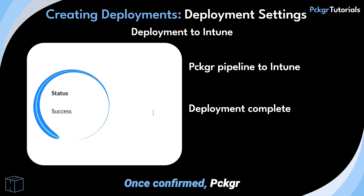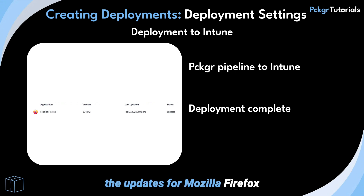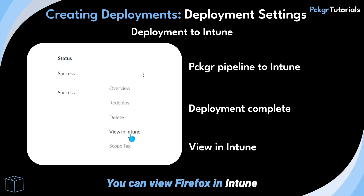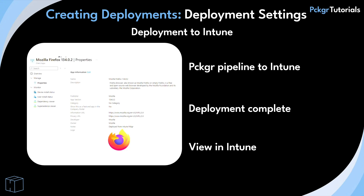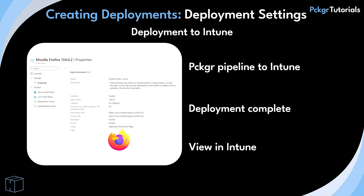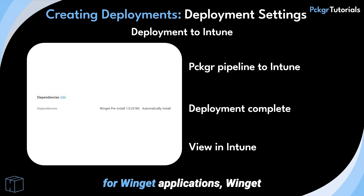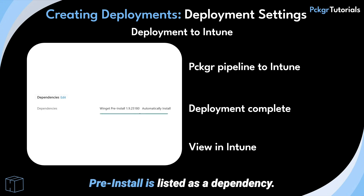Once confirmed, Packager updates the status to Success. Now you have successfully instructed Packager to automatically manage the updates for Mozilla Firefox for your chosen devices in Intune. You can view Firefox in Intune by clicking the three dots and selecting View in Intune. Packager does not change any of your application group assignments or other settings. The old version of the application is simply replaced with the new version. The notes will show that this application has been deployed by Packager, and for Winget applications, Winget Preinstall is listed as a dependency. This dependency is fully managed by Packager.